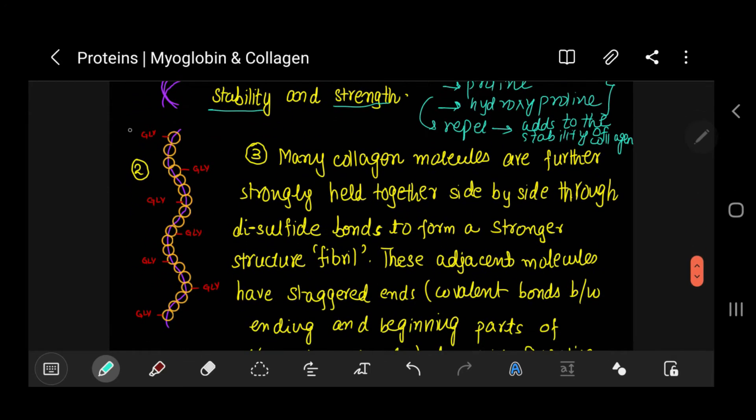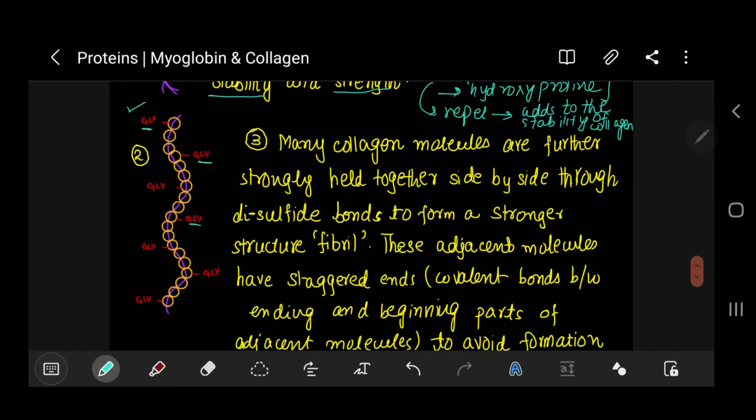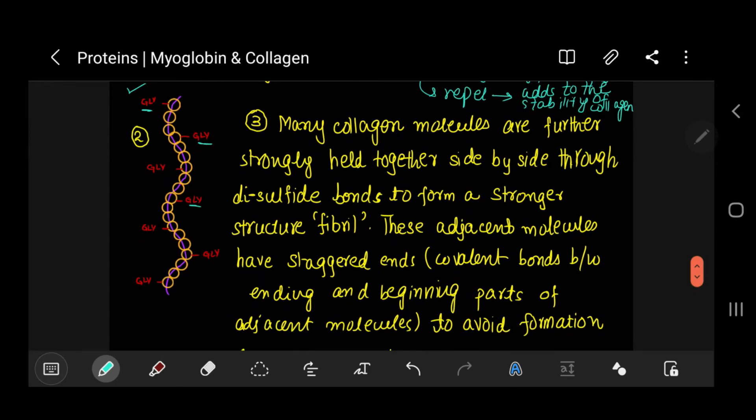This is a model presentation of how every third amino acid is glycine, you can see here. Now many collagen molecules, many of these triple helix collagen molecules, they are further strongly held together side by side through disulfide bonds.